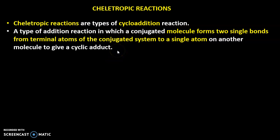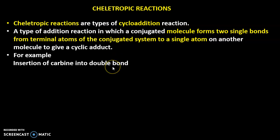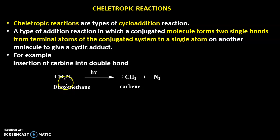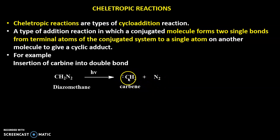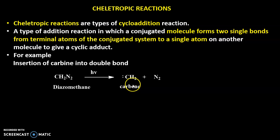The famous example of this chelotropic reaction is the insertion of carbene into the double bond. First, what is carbene? When diazomethane is exposed to light, there is a formation of carbene plus nitrogen. Carbene means a carbon atom which is attached to two other atoms and which has two lone pairs of electrons. Such a species is called carbene.